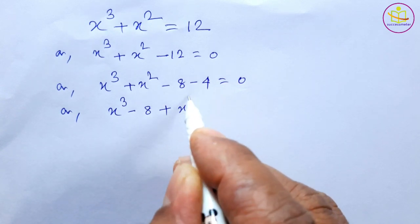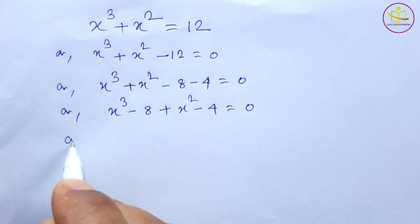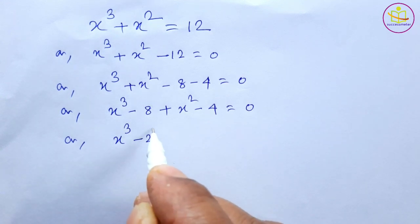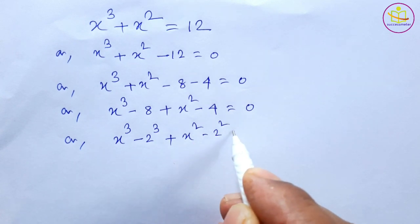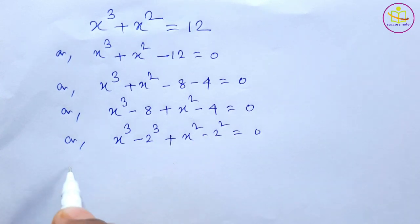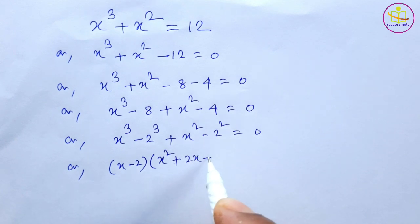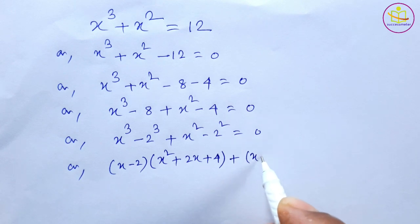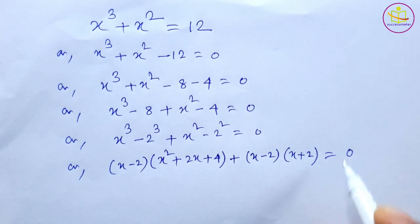Or x³ - 2³ plus x² - 2² = 0, or (x - 2)(x² + 2x + 4) + (x - 2)(x + 2) = 0.